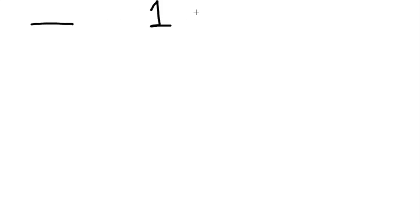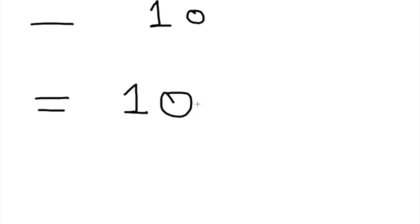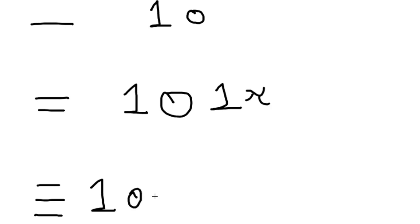Today's video we will be talking about Sigma and Pi bonds. The general rule you must know is that a single bond has one Sigma bond, a double bond has one Sigma bond but it also has one Pi bond, and a triple bond has one Sigma bond but it has two Pi bonds.